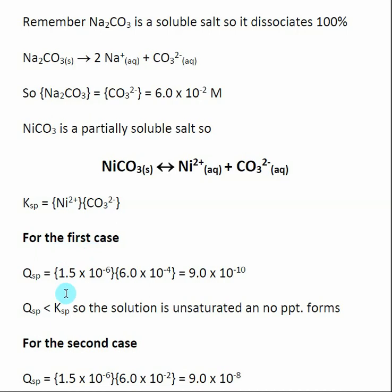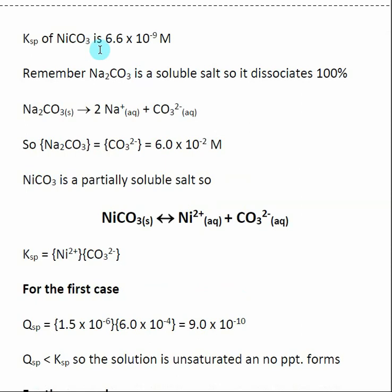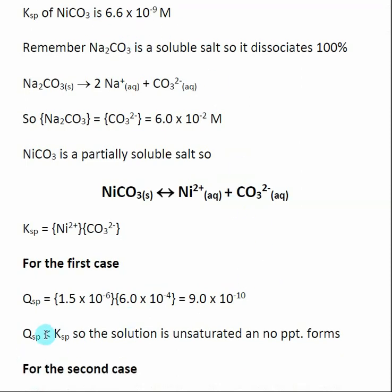For the first case we have our known concentration of nickel. I plug in the concentration of carbonate that's given, I find Qsp which means I'm not sure about where I'm at with my equilibrium. Once I have this number, nine times ten to the minus ten, this is where we're at right now. We then compare that to our Ksp which was given initially.